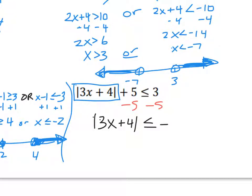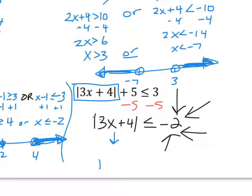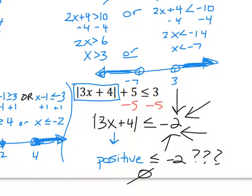For the last one, I first get my absolute value bars by themselves by subtracting 5, giving the absolute value of 3x plus 4 is less than or equal to negative 2. My absolute value is now isolated, but I have a negative on the right side. The absolute value is always going to be a positive number — is a positive number less than or equal to negative 2? No, a positive number is always bigger than negative 2. So this is no solution. If it had instead been a greater than sign, the answer would be all real numbers.